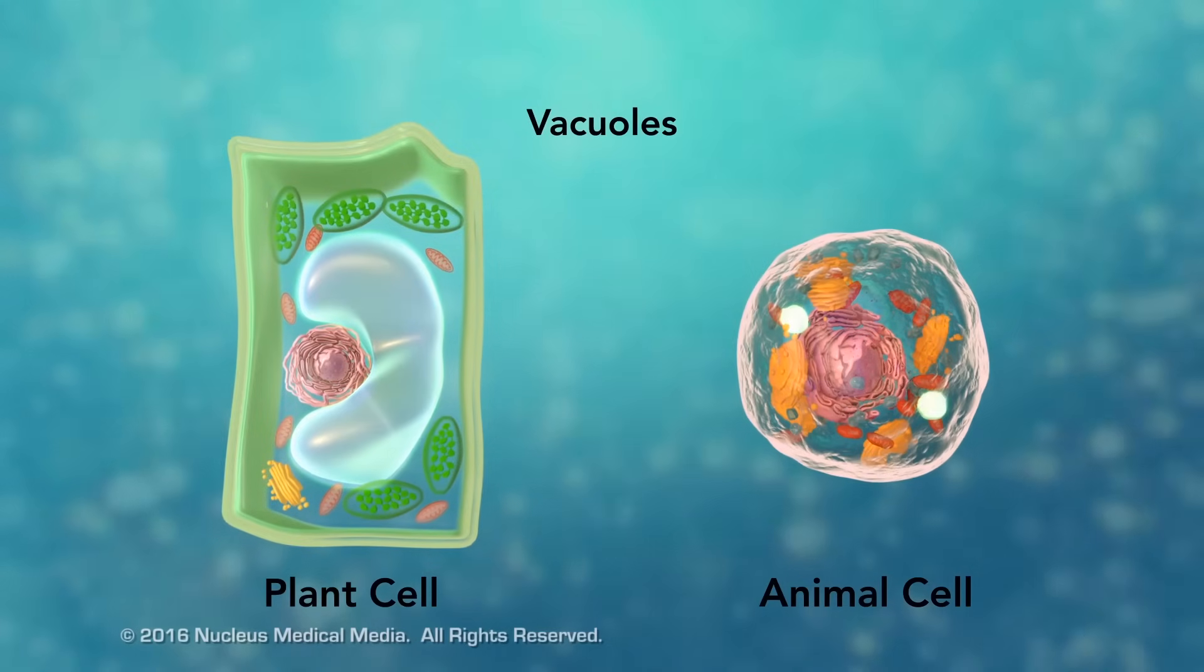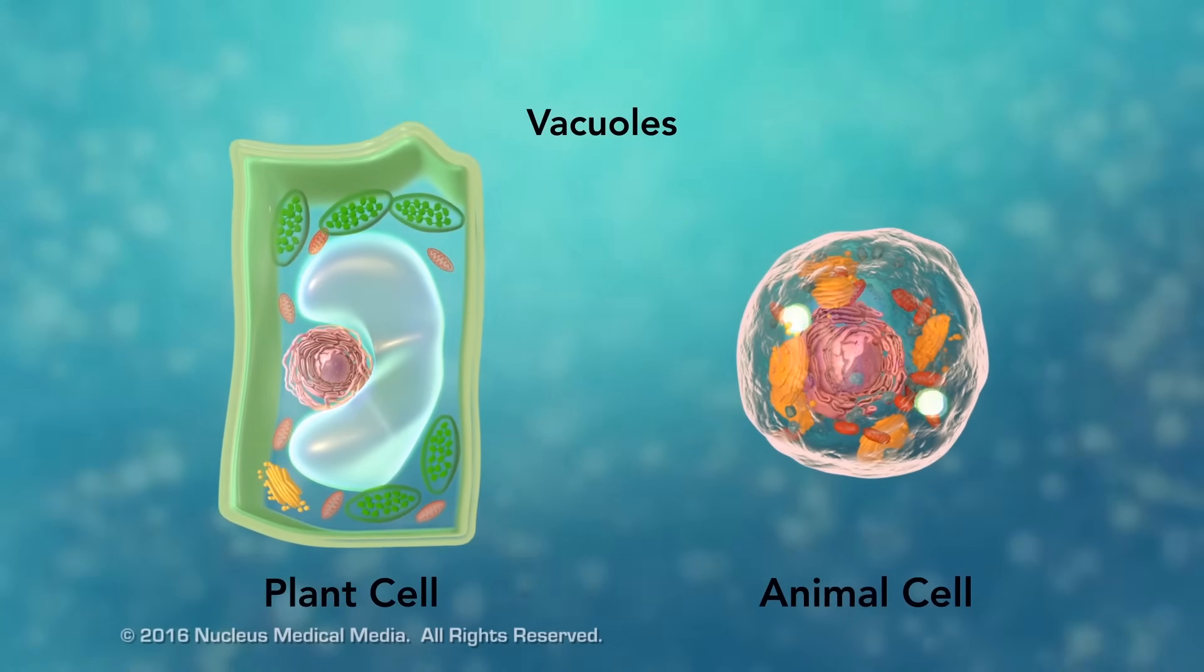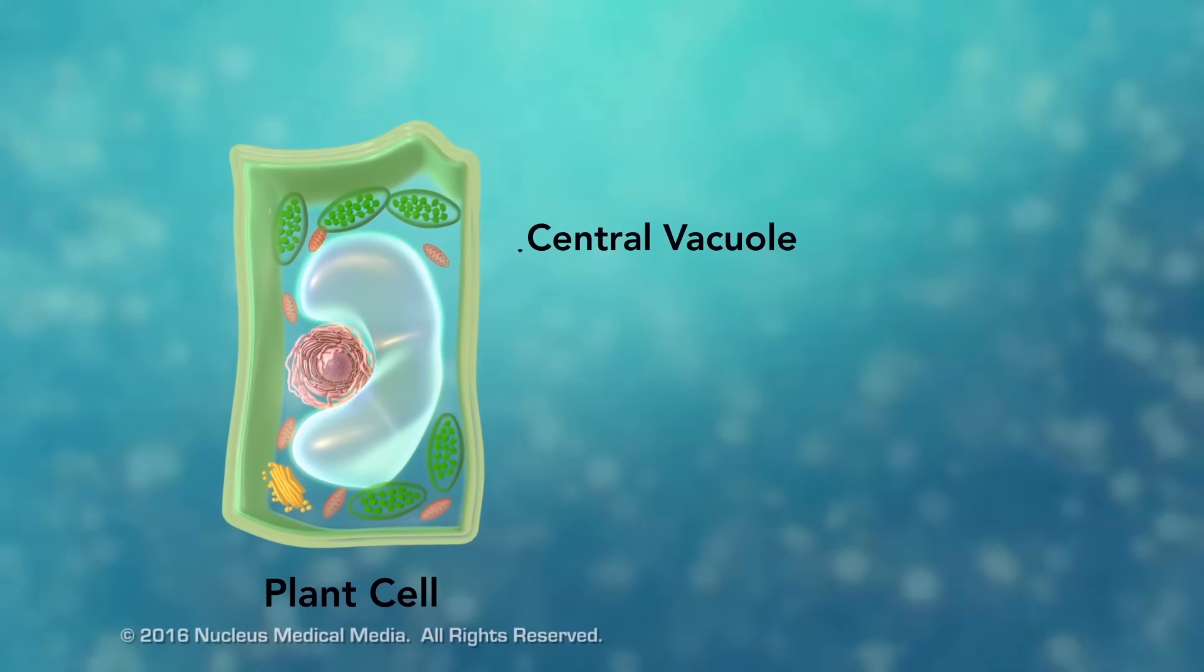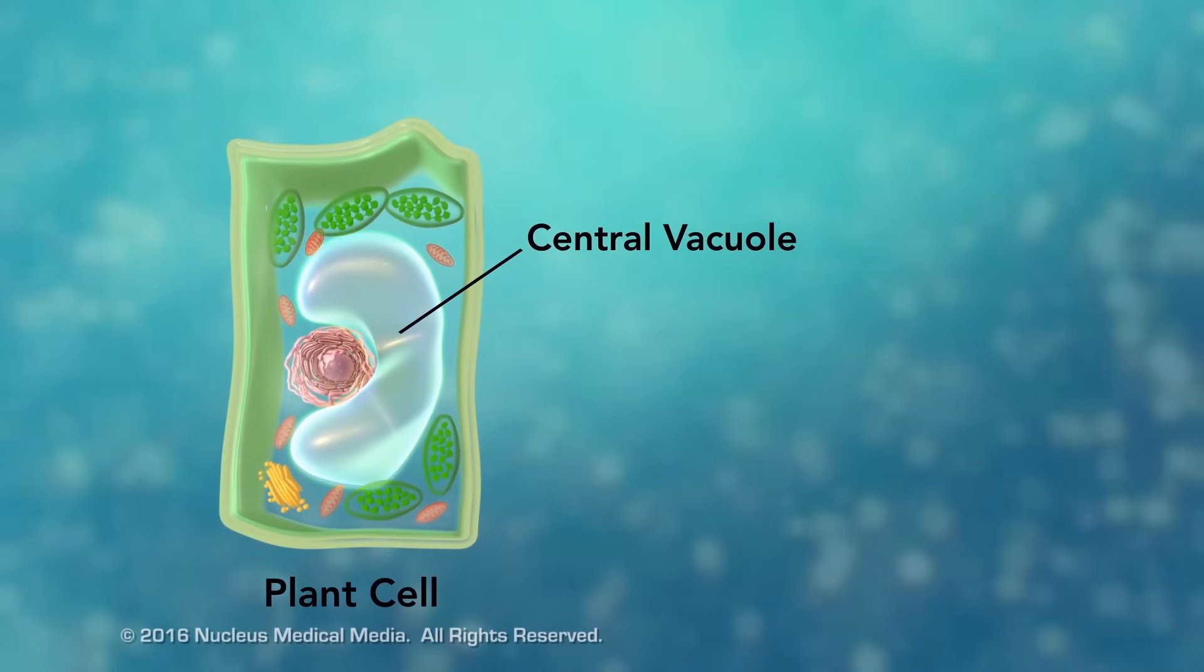Vacuoles are sac-like structures that store different materials. Here in this plant cell, the central vacuole stores water.